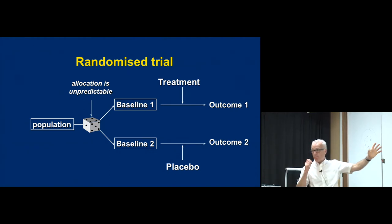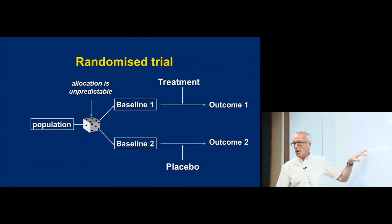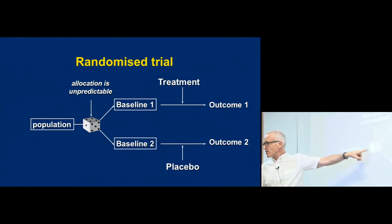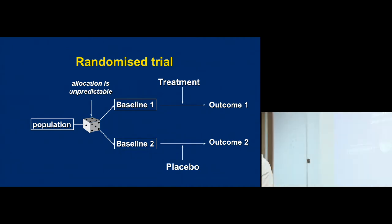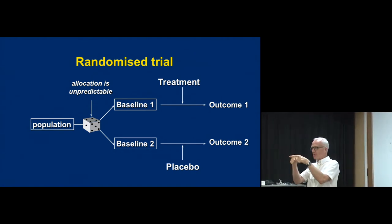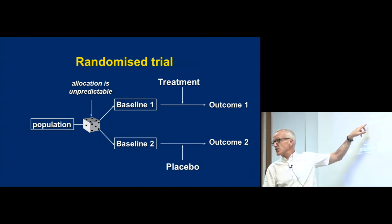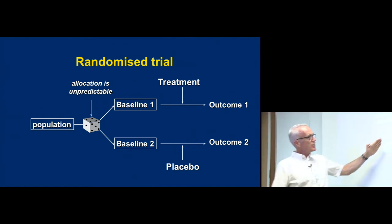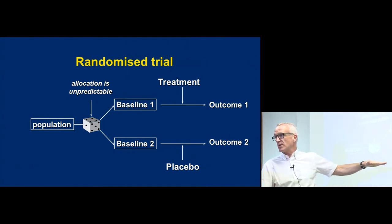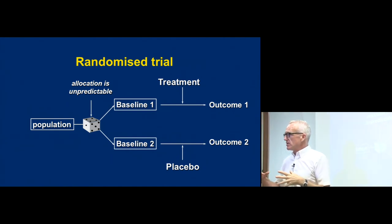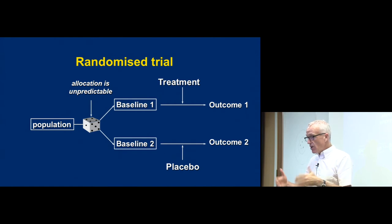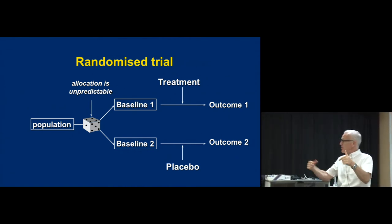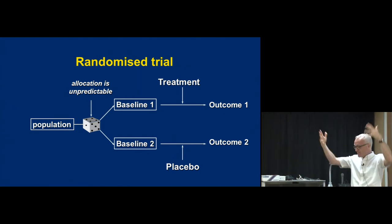Now, this is a randomized trial — very simple structure. The key element of a randomized trial is the randomization and allocation concealment. Tomoko said the key word is 'unpredictable.' The allocation must be unpredictable. So if the allocation is unpredictable, then chance and chance alone determines who gets into the two groups. These two groups should differ only by the play of chance — there shouldn't be differences over and above the play of chance.